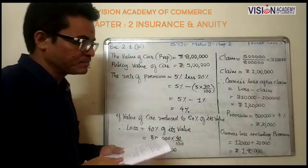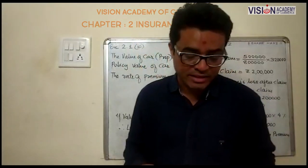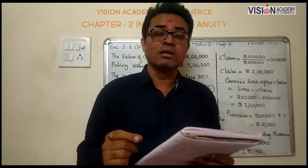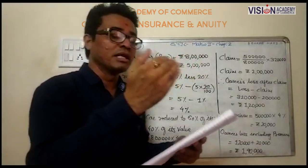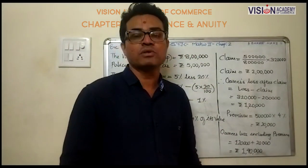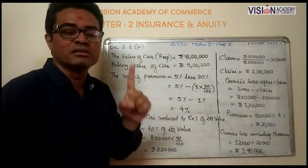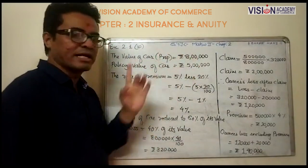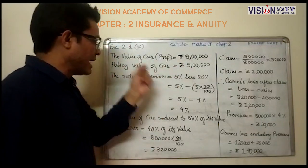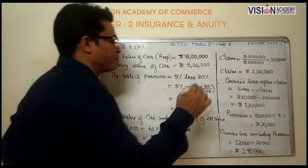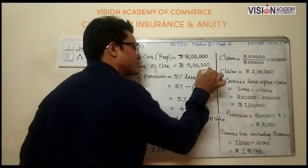Question number 10: A car valued at rupees 8 lakhs is insured for rupees 5 lakhs. The rate of premium is 5 percent less 20 percent. How much will the owner bear including the premium if the value of the car reduces to 60 percent of its original value? In this question, property value is 8 lakhs and policy value is rupees 5 lakhs.